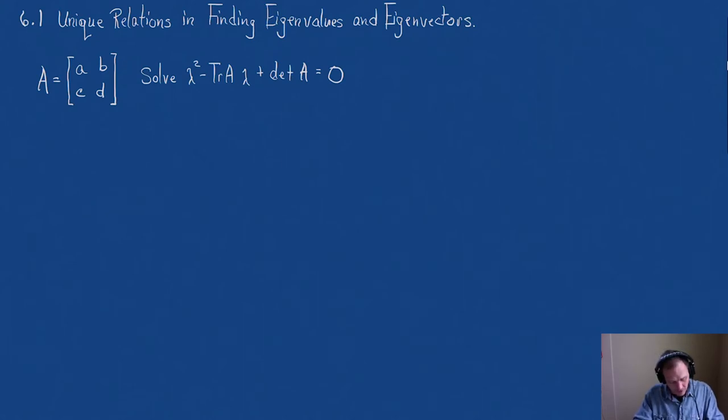Here they are. The first one is, let's write this out. If we use the quadratic formula, we would say that lambda is equal to the trace of A plus or minus this big square root. And we said the big square root is the trace of A squared minus 4 times the determinant of A. All of that is over 2.